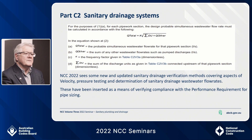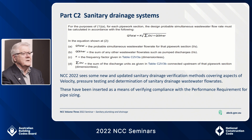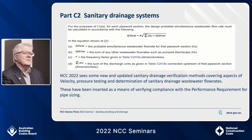In addition to the performance requirements, changes in this part include a new pipe sizing method for sanitary drainage systems through the introduction of new verification methods. The two existing verification methods brought over from 2019 are velocity and liquid-to-air ratio, and pressure testing. The new verification method for 2022 is determination of sanitary drainage wastewater flow rates.